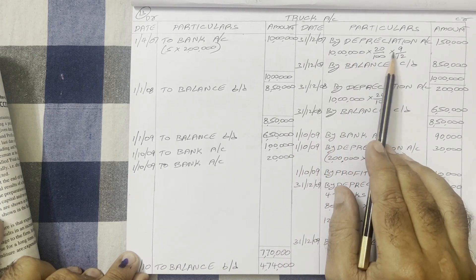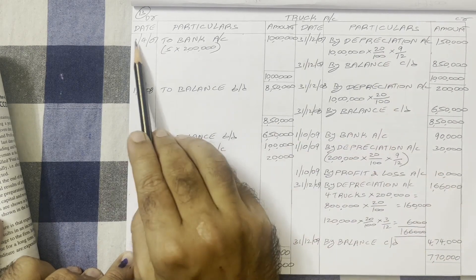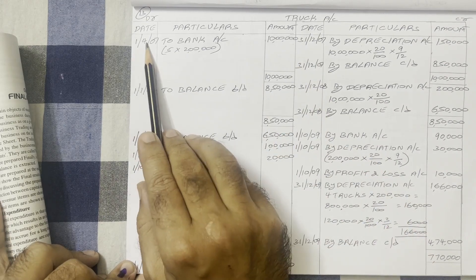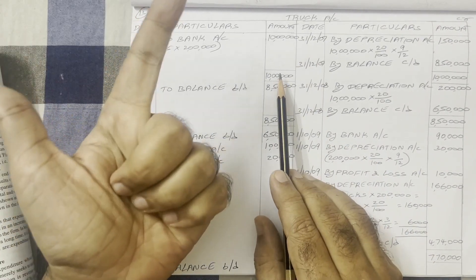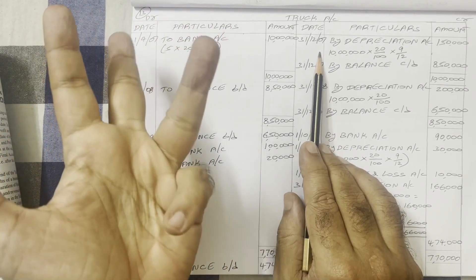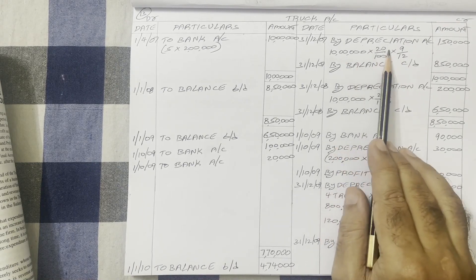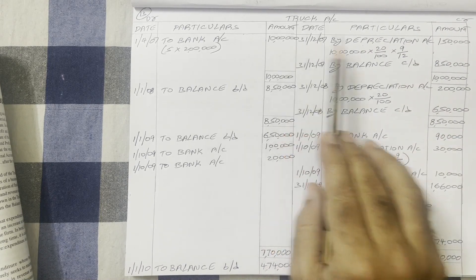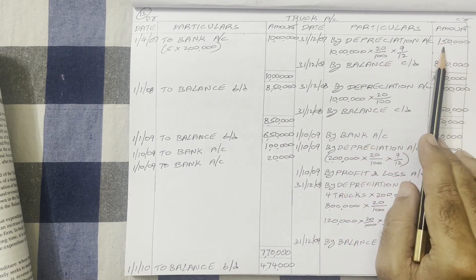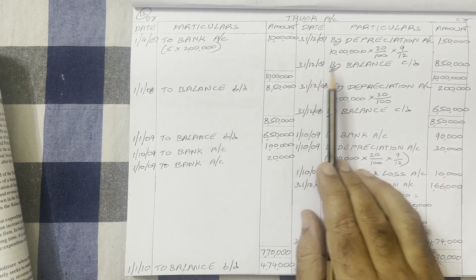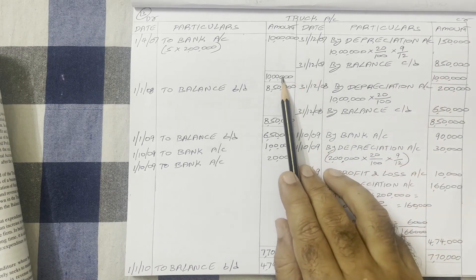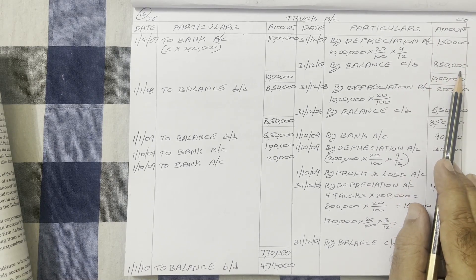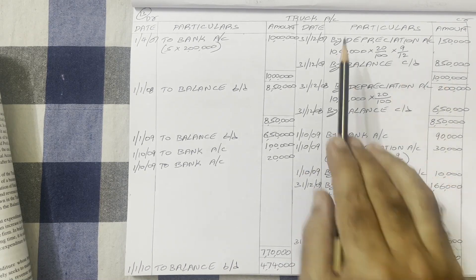On the credit side, write 'by depreciation account.' Five trucks value is 10 lakh rupees, depreciation rate is 20%. Since they were purchased on 1st April and accounts close on 31st December, we count April through December — that is nine months. So: 10 lakh × 20/100 × 9/12 = 1,50,000 rupees. Balance carried down = 10 lakh − 1,50,000 = 8,50,000 rupees. Both sides total 10 lakh. First year is completed.